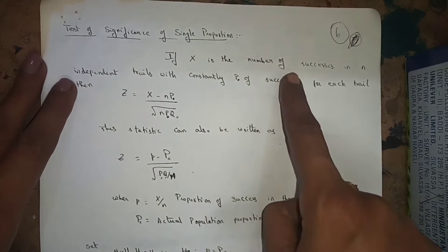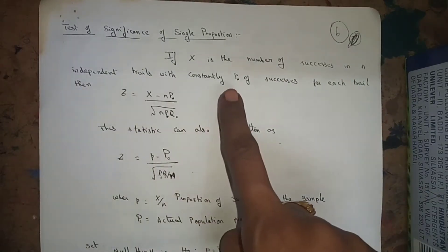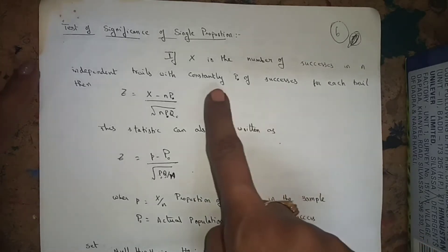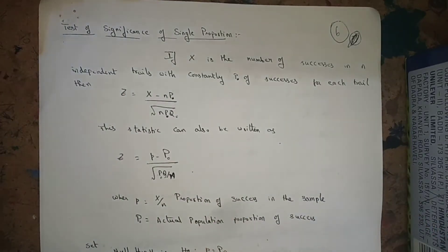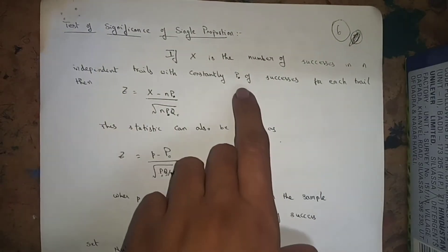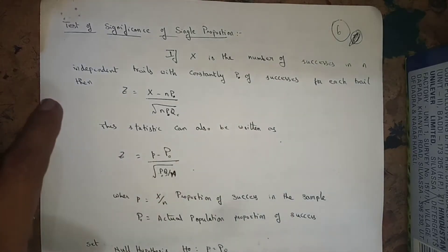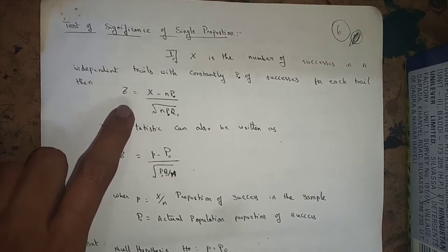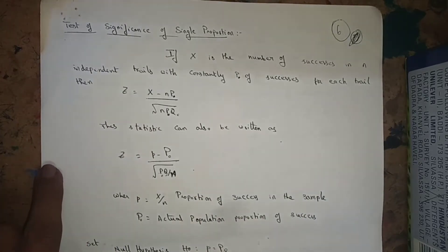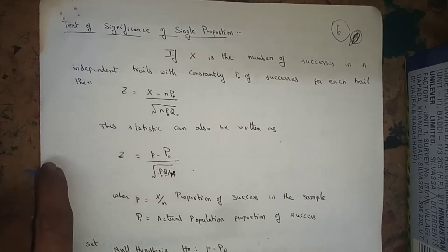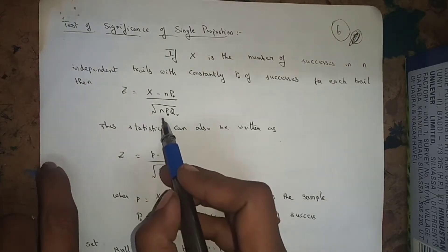If x is the number of successes in n independent trials with constant probability p₀ of success for each trial, then the test statistic is z = (x − n·p₀) / √(n·p₀·q₀). This is the test statistic.